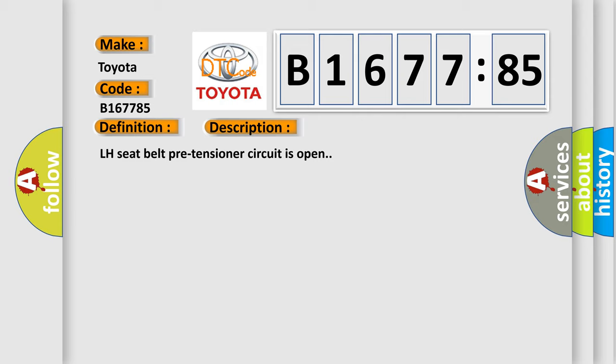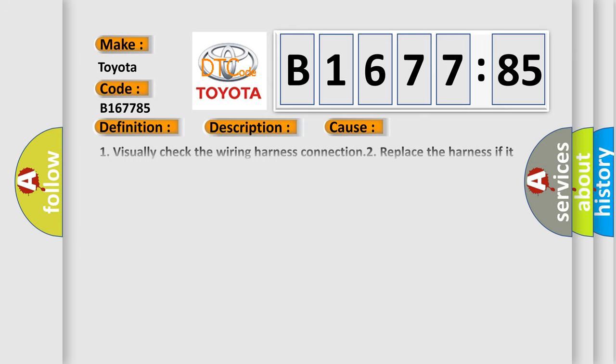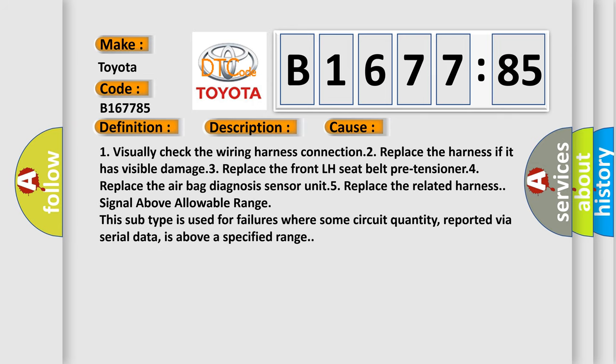And now this is a short description of this DTC code: LH seat belt pre-tensioner circuit is open. This diagnostic error occurs most often in these cases.